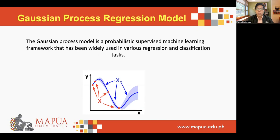The Gaussian process model is a probabilistic supervised machine learning framework that has been widely used in various regression and classification tasks. It is essentially a probabilistic distribution over possible functions that fit a set of points. The mean of the distribution function and variances indicate how confident the predictions are. For a multivariate regression such as our research focus, the Gaussian regression function is given by this equation, wherein x are the observed data points, mu represents the mean function, and k represents the kernel function.